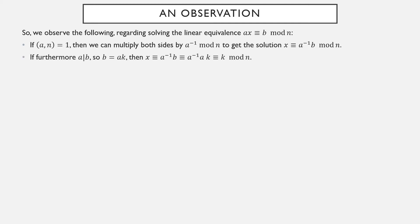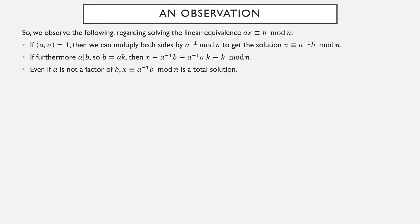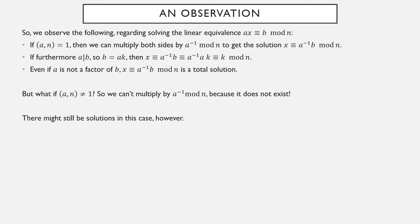If a is also a factor of b, then b can be written as a times something, and then a inverse times b will cancel out, leaving behind just that other factor. But even if a isn't a factor of b, x ≡ a inverse times b completely solves the problem, as long as a was relatively prime to n and therefore had a modular inverse to multiply by. What if a and n are not relatively prime, so a inverse mod n doesn't exist? There might still be solutions.